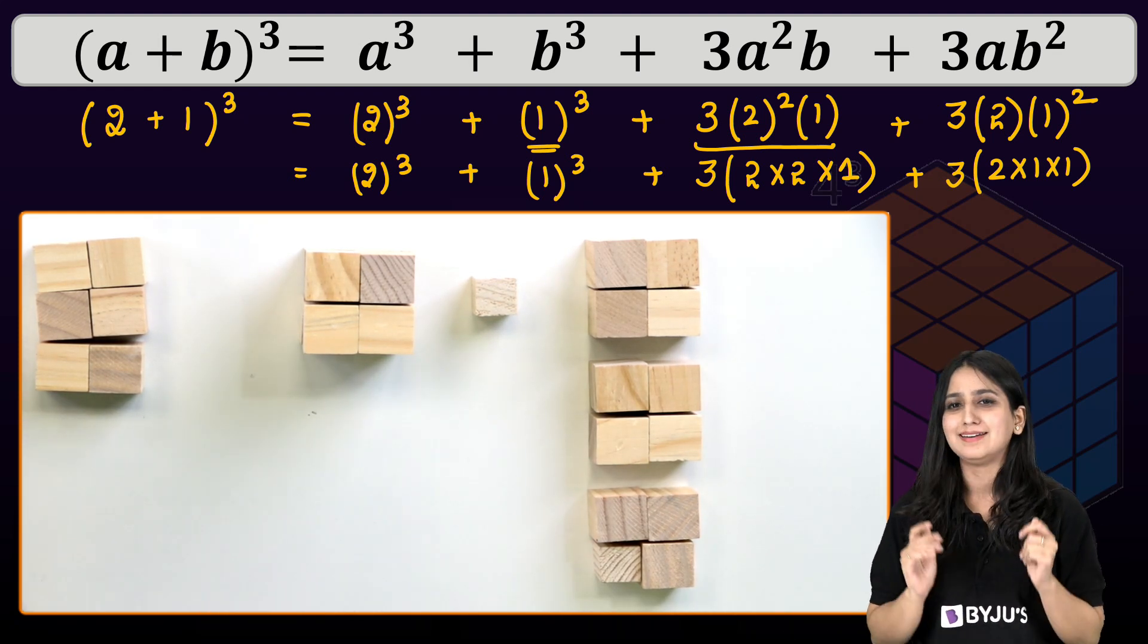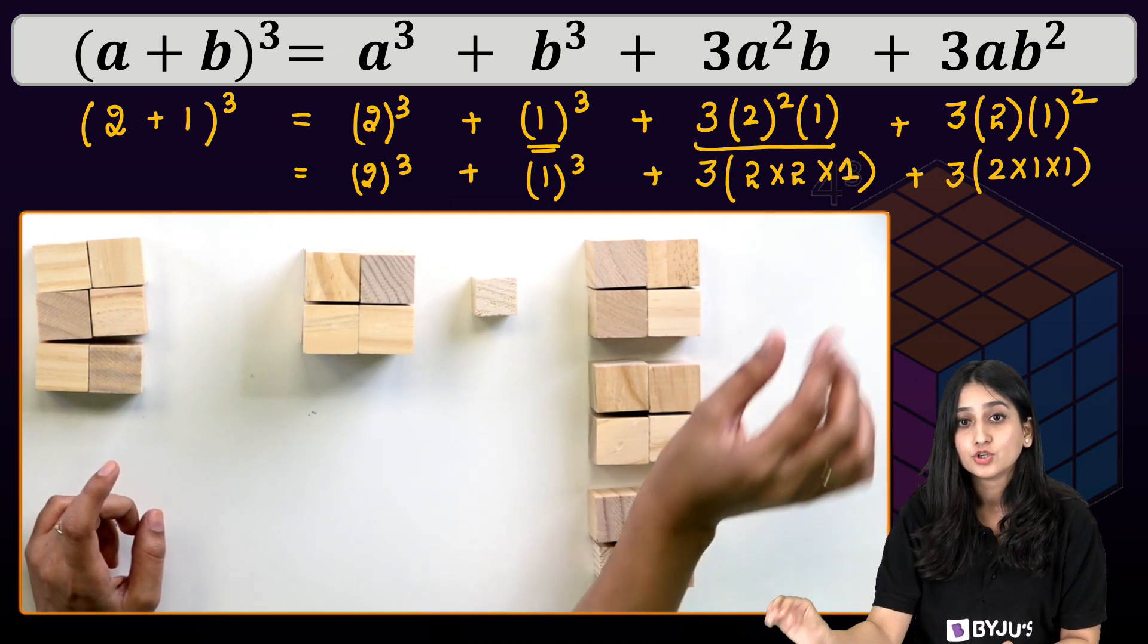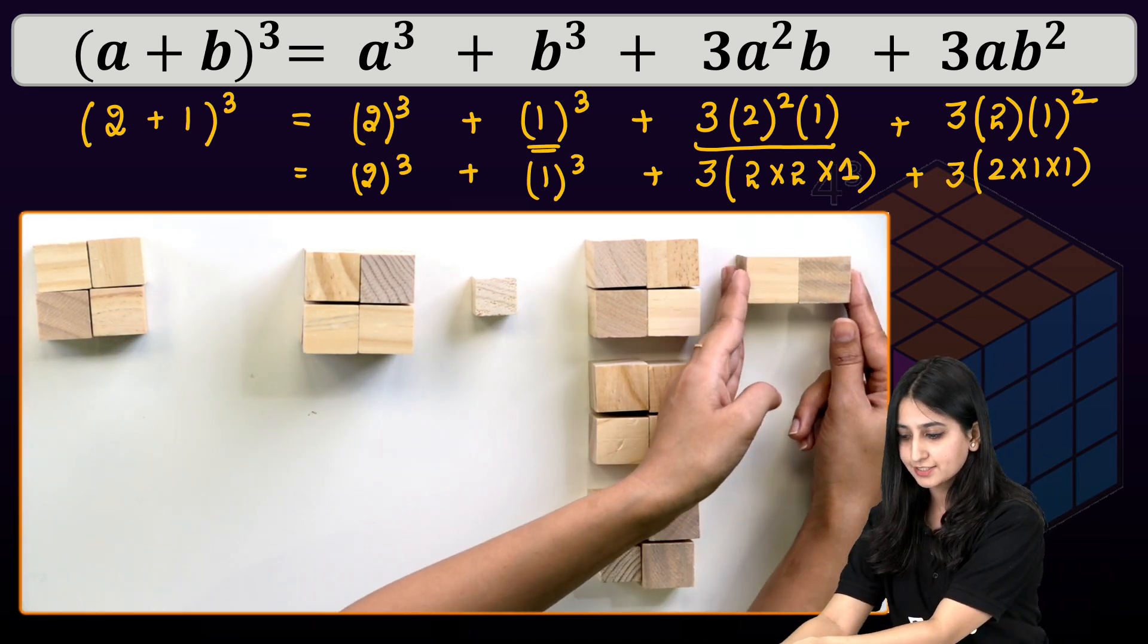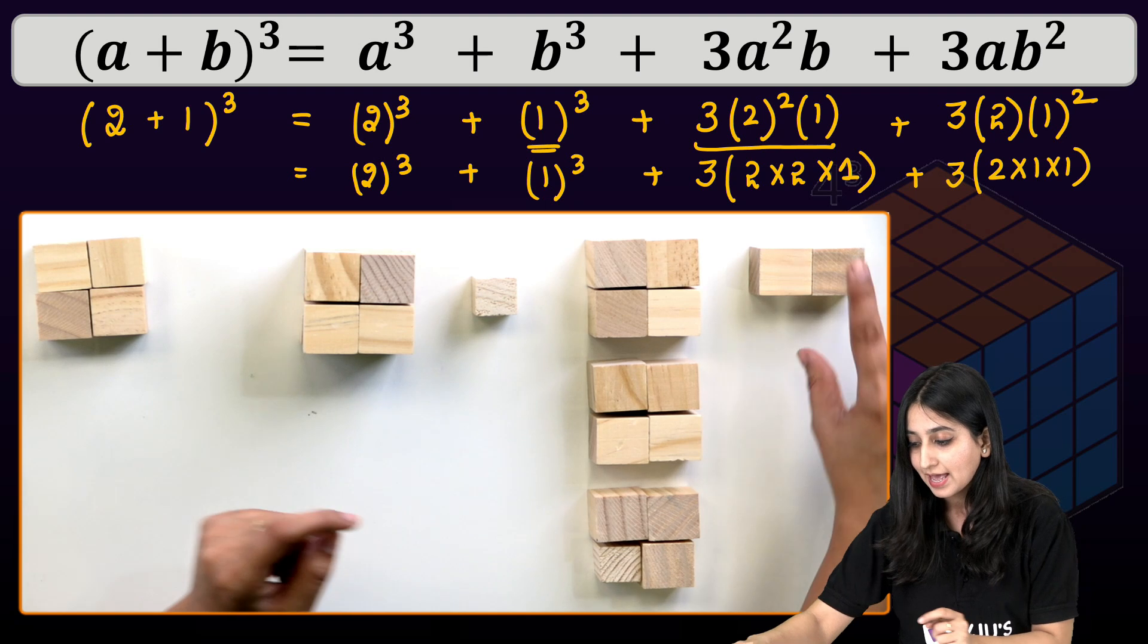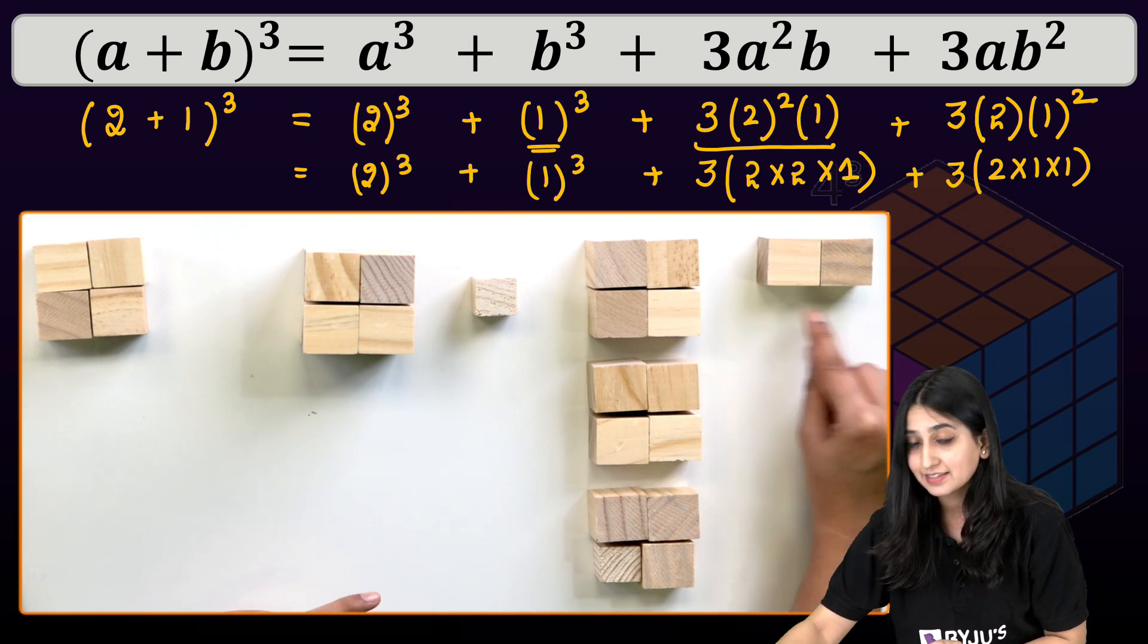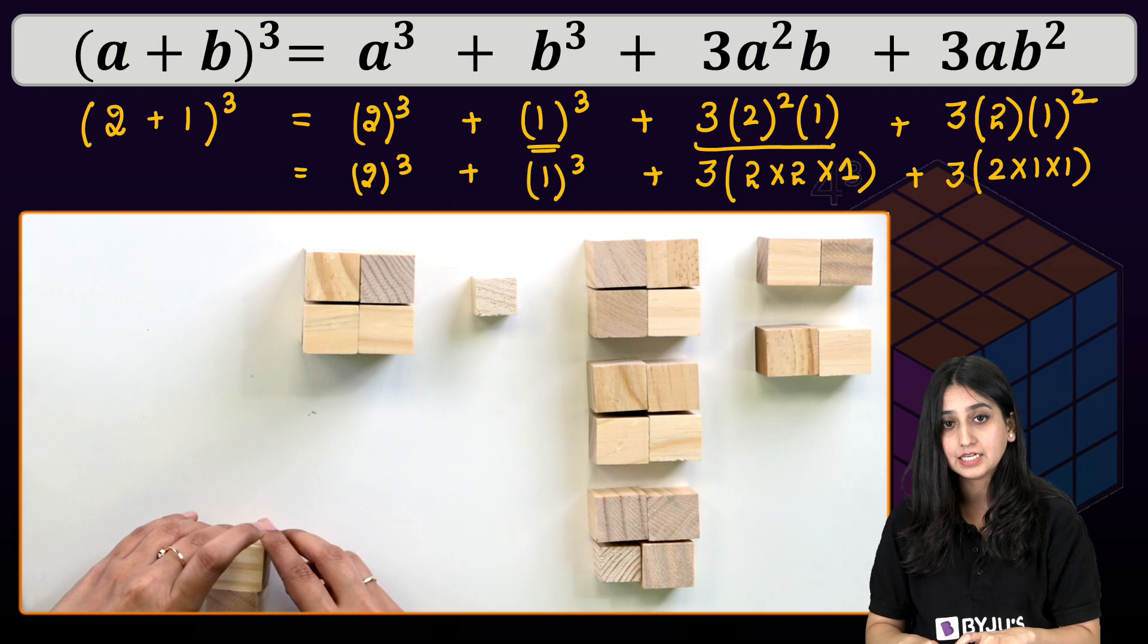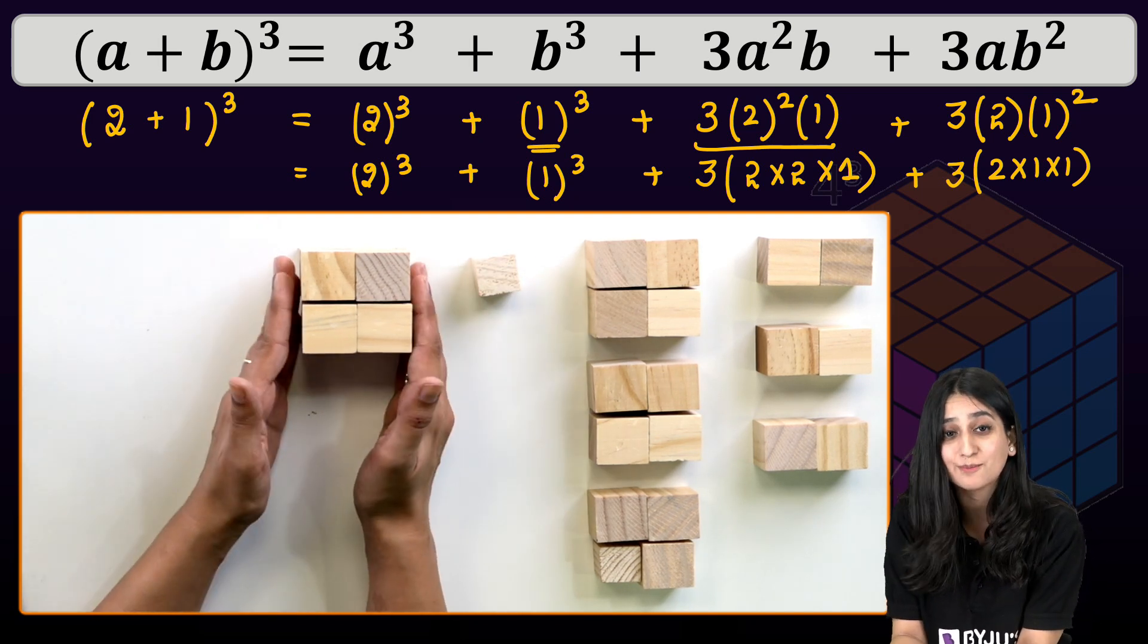Now let's move on to the last term. That is our 4th term which is 3 into 2 into 1 into 1. So what does this mean? That means I need a cuboid which is length 2, breadth 1, and height also 1. So length into breadth into height. We have 2 into 1 into 1. So how many cubes I need? I want such 3 blocks. So I made this same to same 3 blocks.